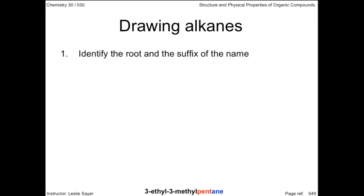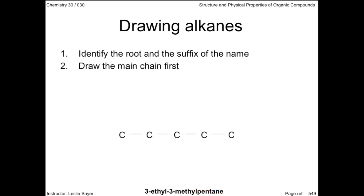In this case, "pent" is 5, and the suffix — we've only covered alkanes to this point — so the "-ane" at the end tells us the chain has only single carbon-carbon bonds. Next, draw the main chain first. Just write out the chain of carbons in a row joined by single bonds. Don't worry about hydrogens at this point.